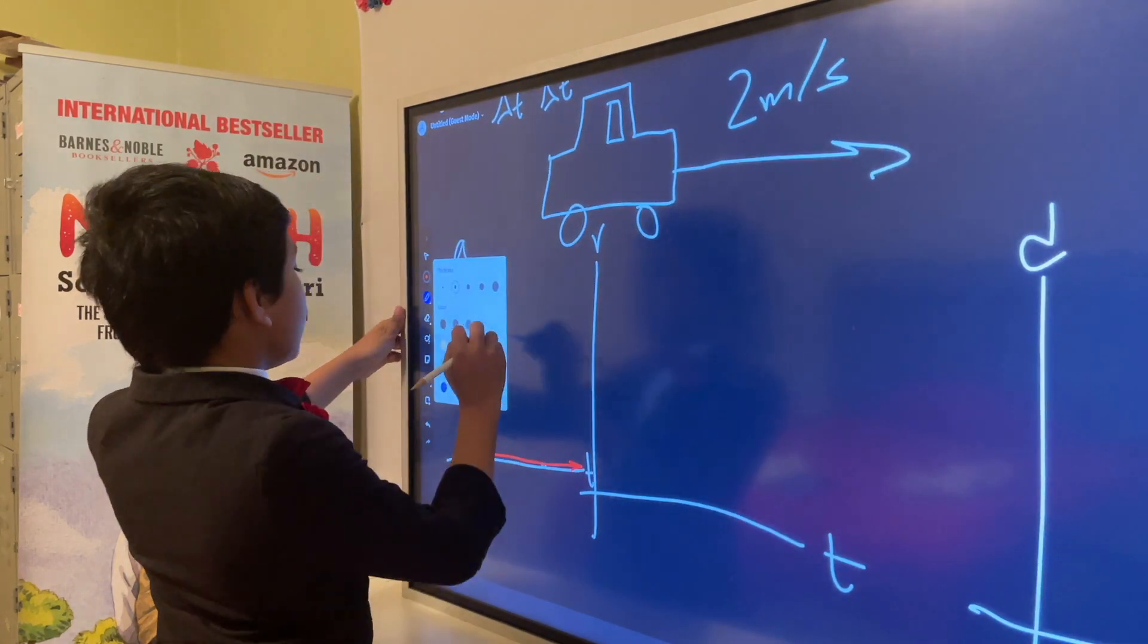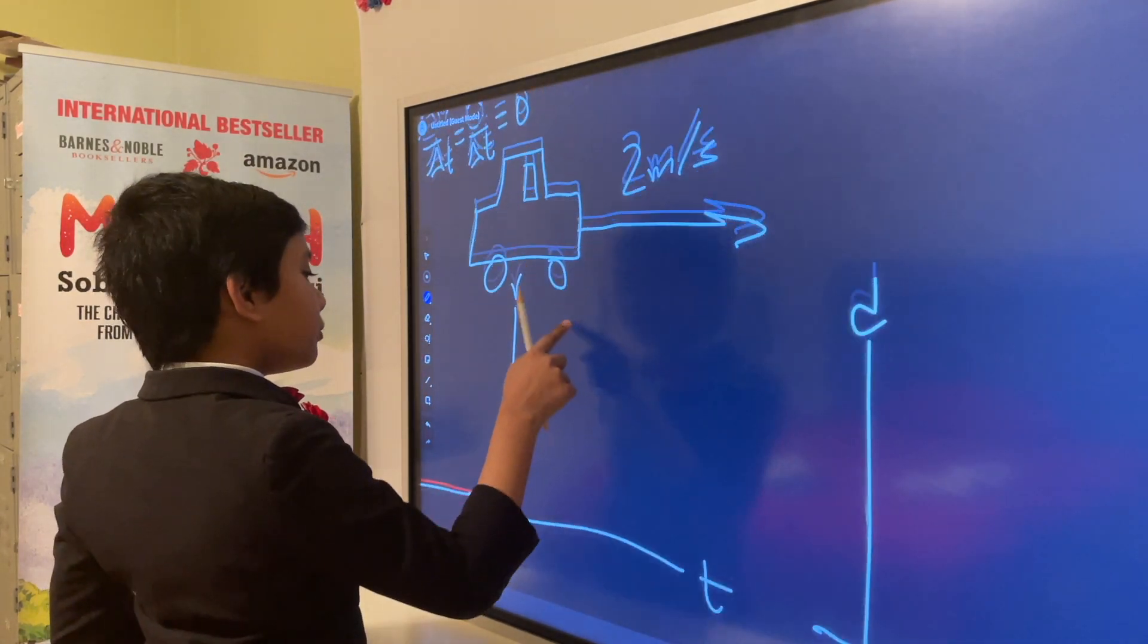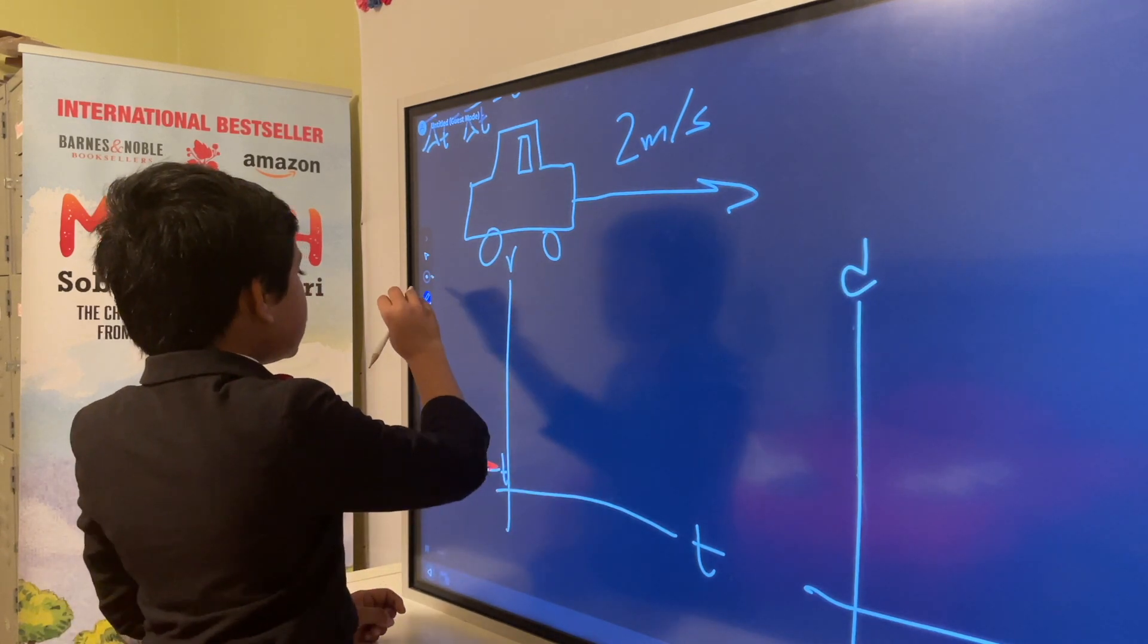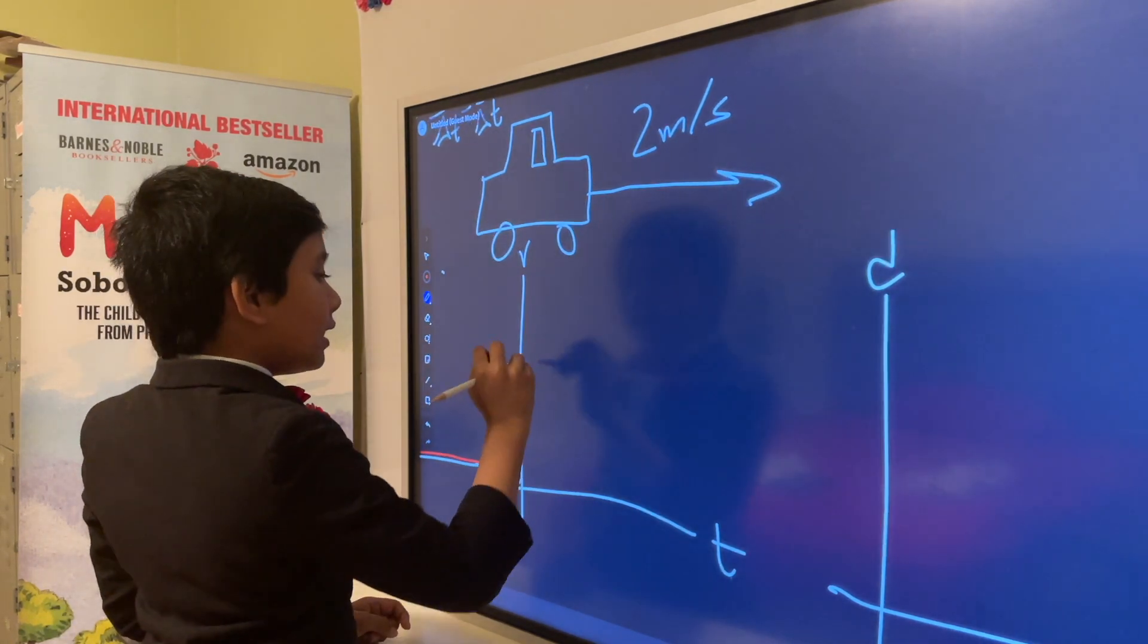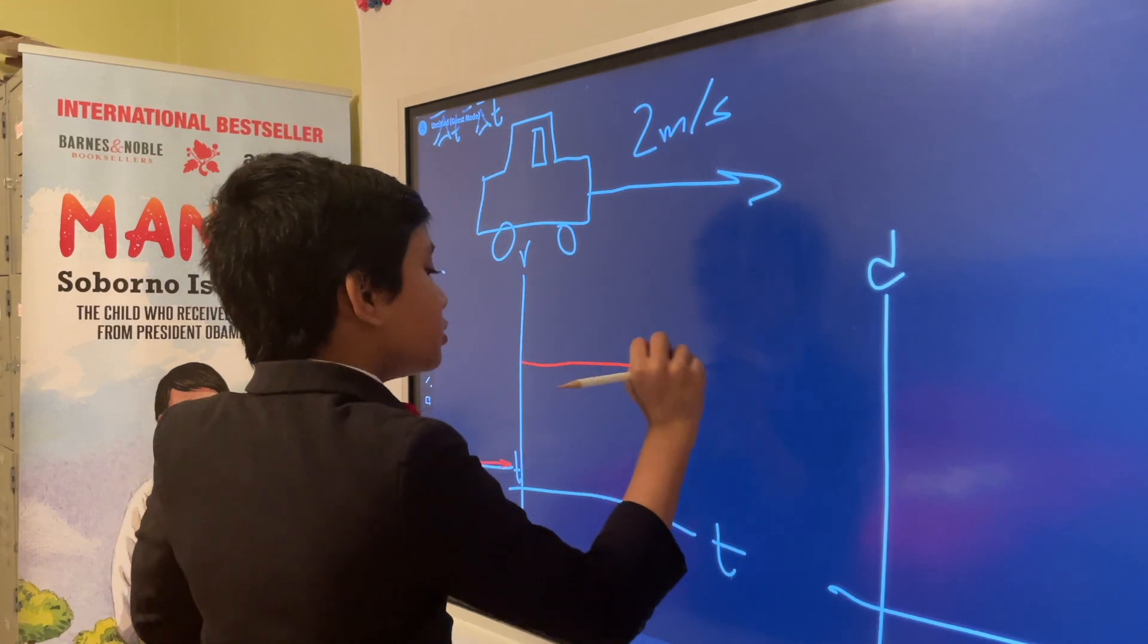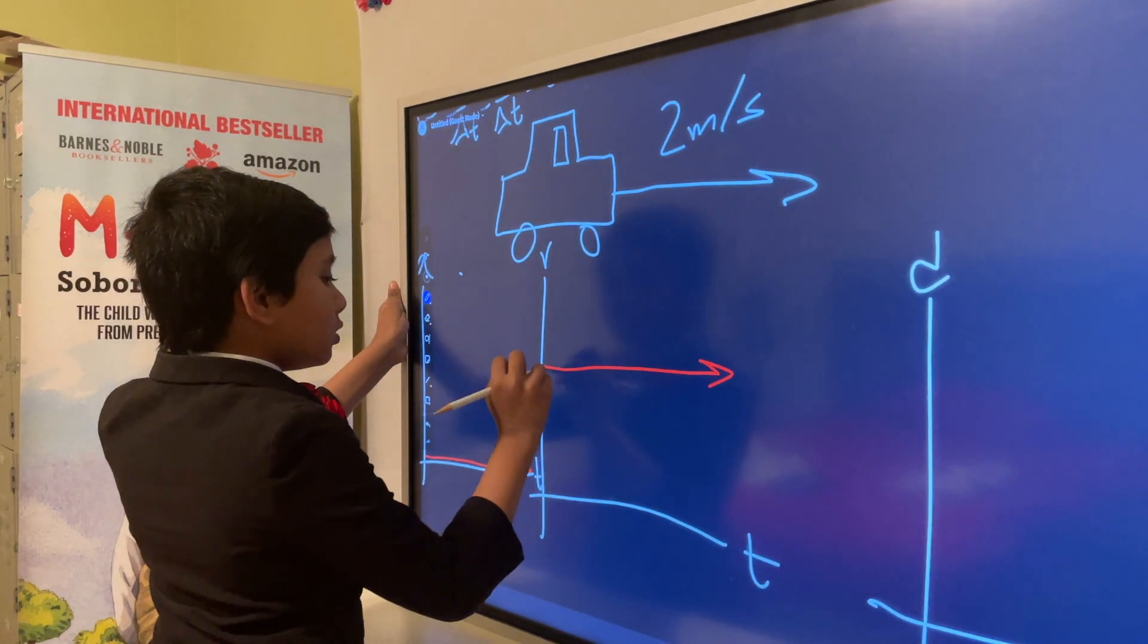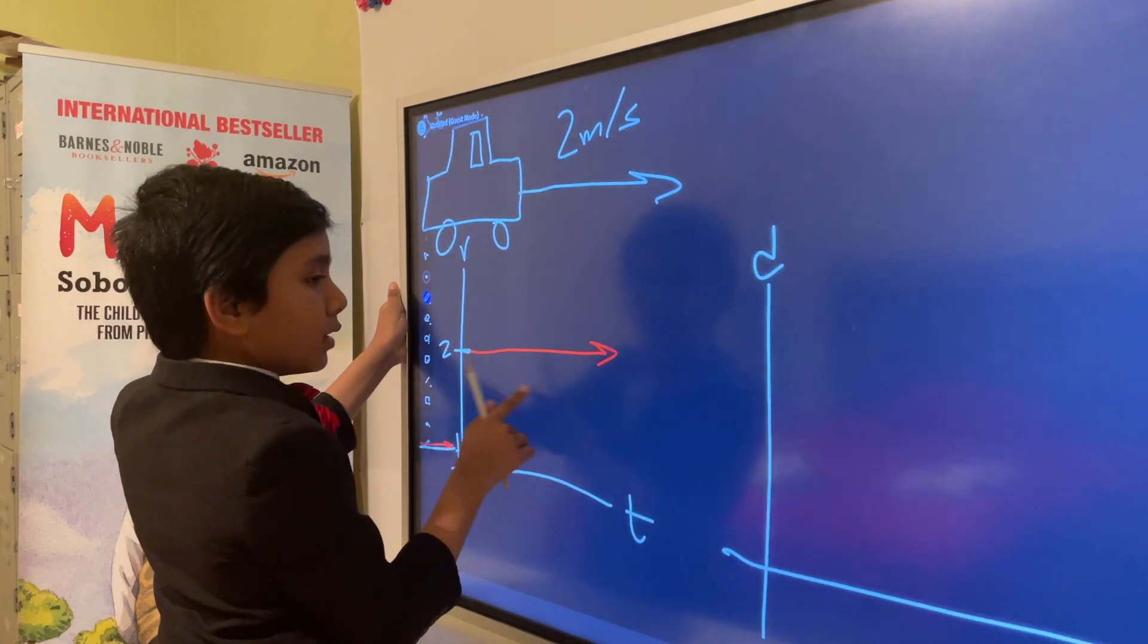The velocity graph is a bit more interesting. It's always at 2 meters per second, so it will still be a straight line. However, it has some magnitude. The magnitude is, of course, 2. So we're going to put it there.